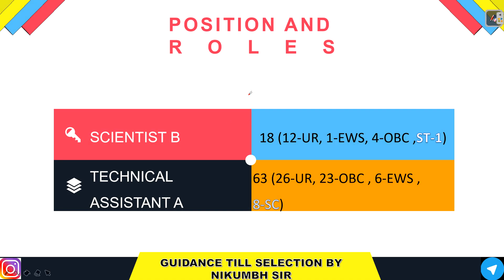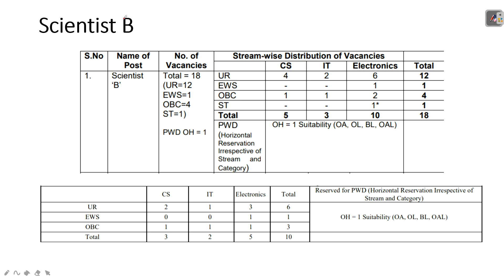About vacancies: for Scientist B, total 18 vacancies are there — increased from earlier. For Technical Assistant A, total 63 vacancies are there. For ST, one vacancy is open, and for SC, two vacancies are there. Now I will show you the branch-wise distribution of vacancies. For Scientist B, this is the new updated list — total vacancies are now 18, whereas earlier it was 10.